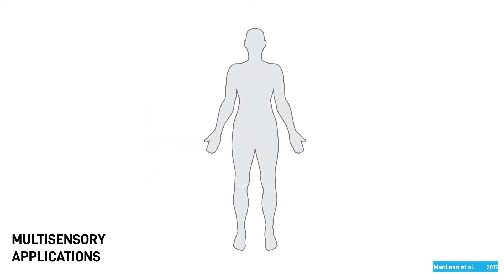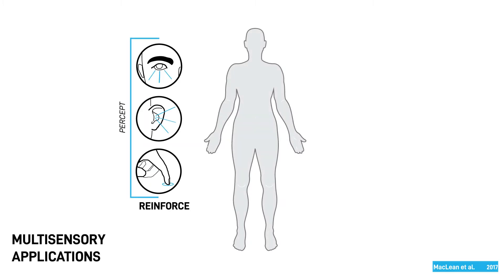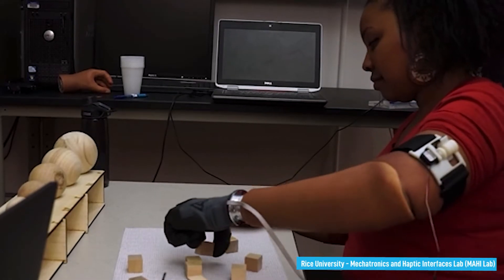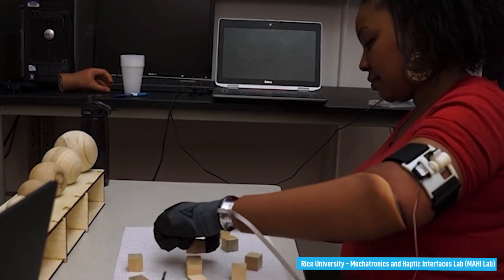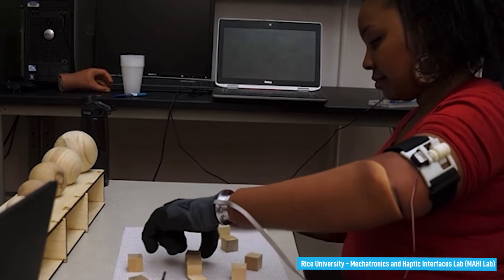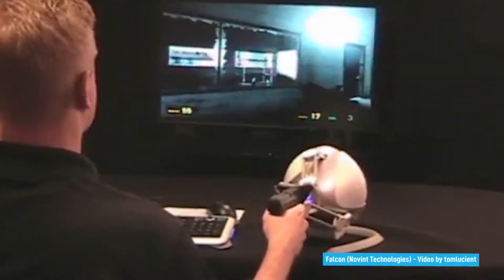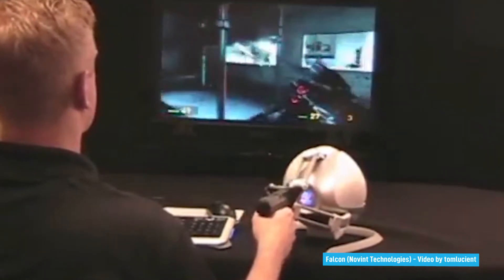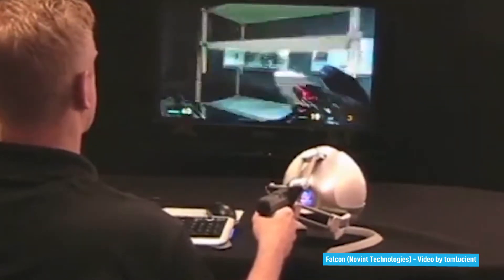For number one, a haptic signal can work with other senses to provide reinforcing information about the same percept, or complementary information about a separate one. In this example, haptic sensations applied to the amputee's arm reinforce interaction by duplicating visual information about grasping of the object. In this video game, the force and vibration conveys impact information from the gunshots that complements the visual scenery.